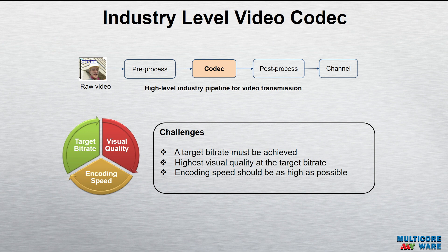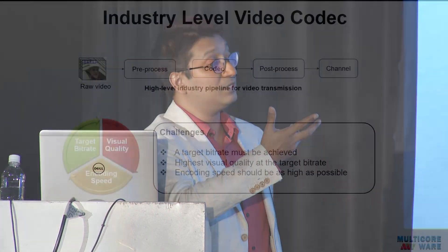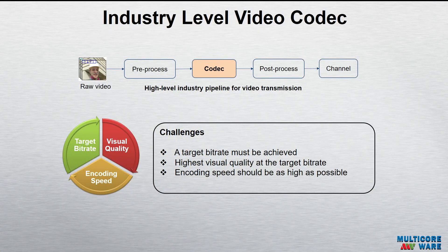For an industry-standard video encoder, we believe there are three key requirements. First, it should achieve a target bit rate. Second, while achieving that target bit rate, it must deliver the highest quality video. Third and most important, while maintaining these two, encoding time should be as low as possible. Unfortunately, these three things are mutually exclusive — encoding complex content needs more bits, and good encoding techniques require high computational complexity. These are the key challenges every industry-level encoder faces.